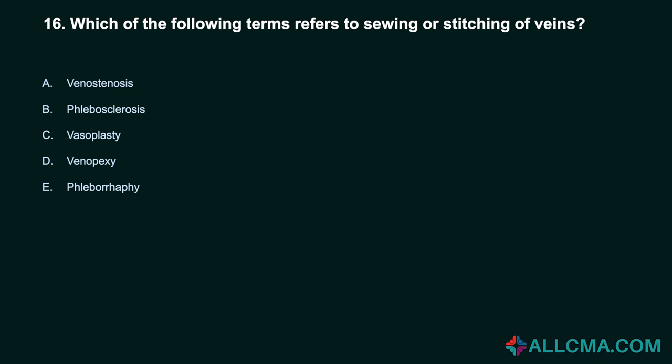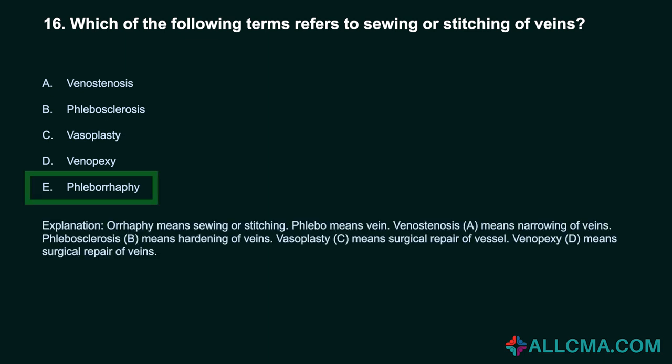Question 16: Which term refers to sewing or stitching of veins? a) venostenosis, b) phlebosclerosis, c) vasoplasty, d) venopexy, e) phleborrhaphy. Correct answer: E, phleborrhaphy. The suffix -rrhaphy means sewing or stitching; phlebo- means vein. Venostenosis means narrowing of veins. Phlebosclerosis means hardening of veins. Vasoplasty means surgical repair of a vessel. Venopexy means surgical fixation of a vein.